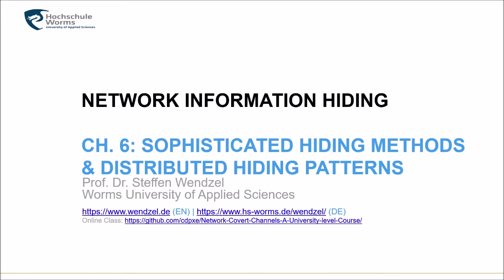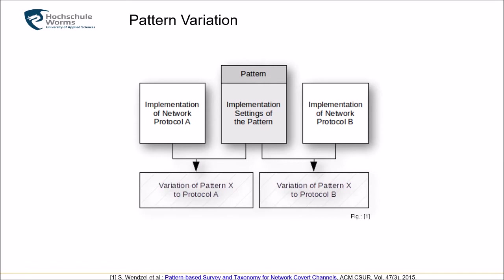Welcome back to Network Information Hiding. Chapter 6 is what we deal with today: sophisticated and distributed hiding methods and patterns. Let's first look at the idea of pattern variation. Pattern variation is what we proposed in 2015, so you already know what patterns are. If not, have a look at chapters 4 and 5.